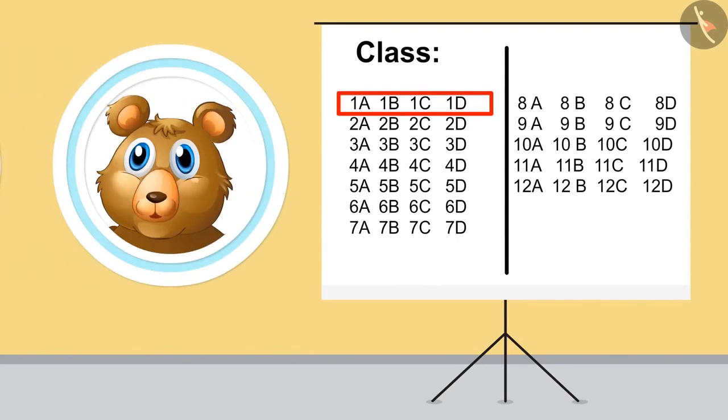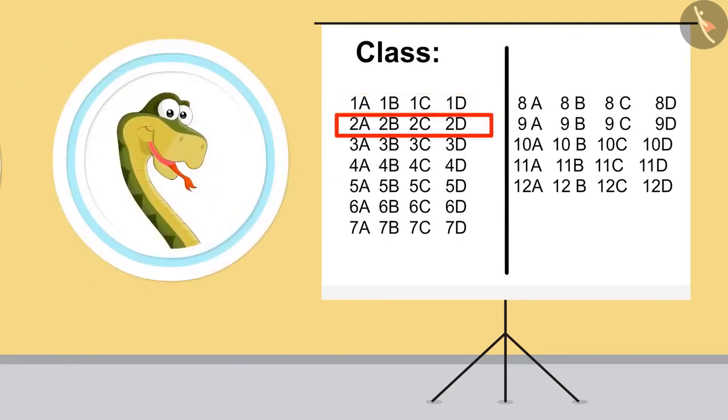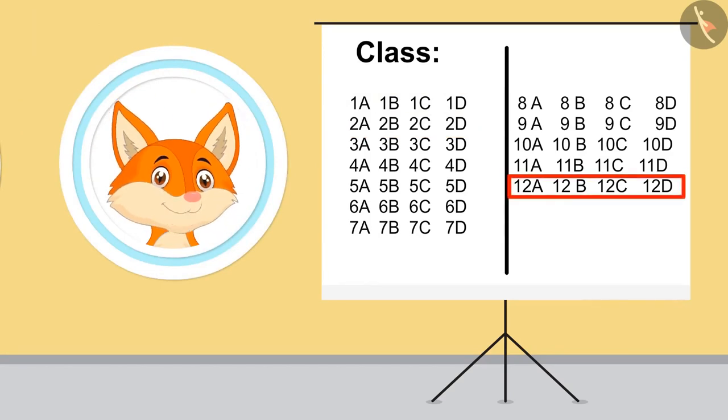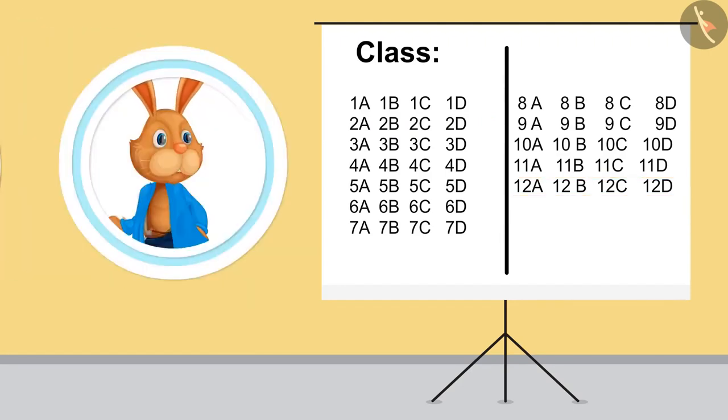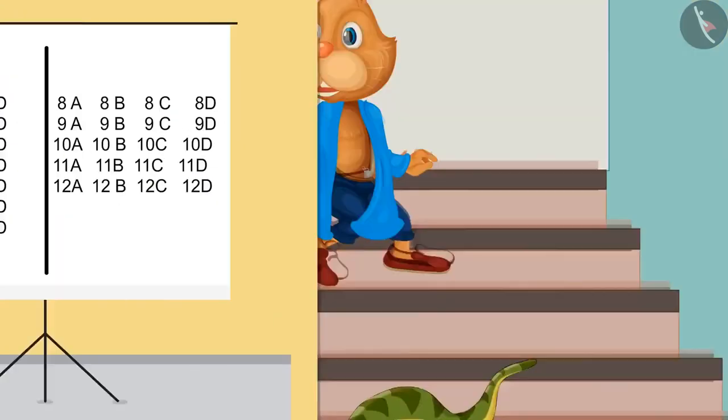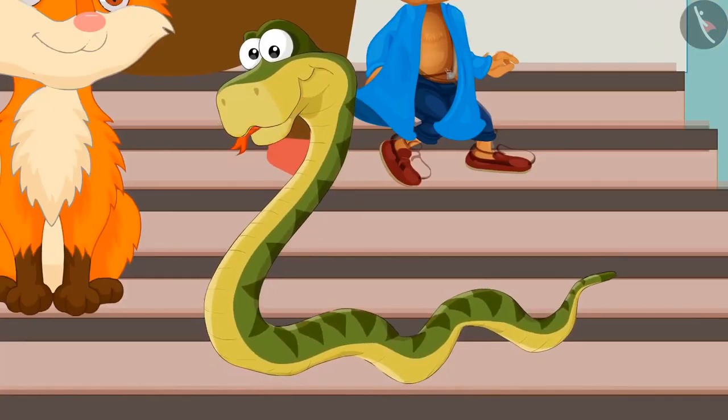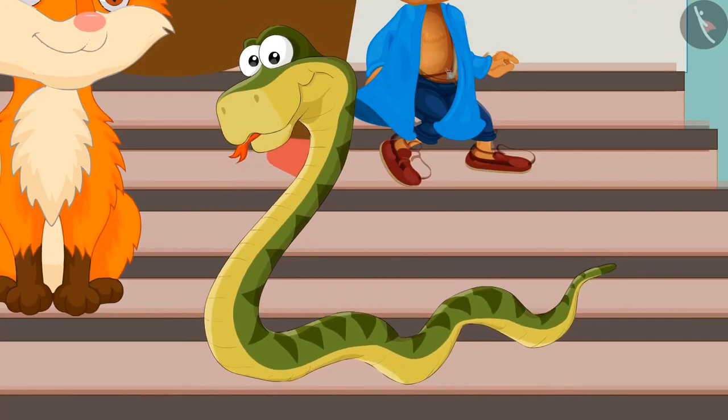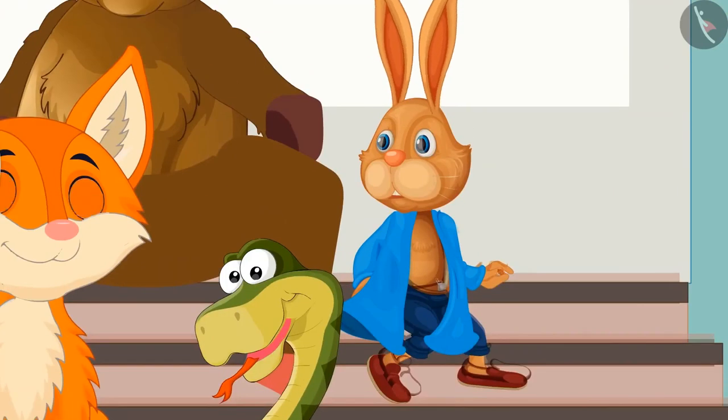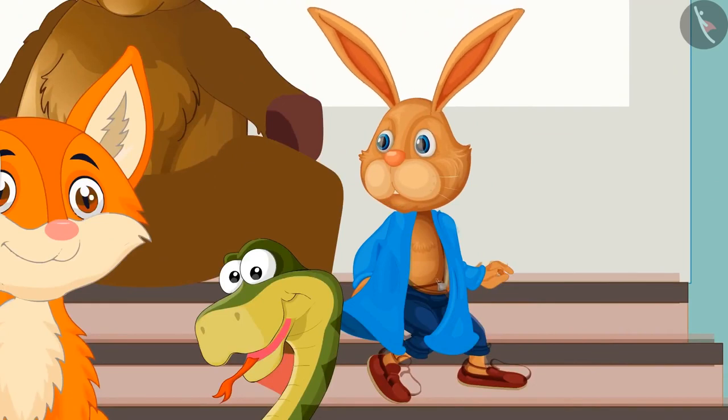Yes, yes. 1A, 1B, 1C and 1D. Then 2A, 2B, 2C, 2D. Yes, till 12th, all classes are named like this with numbers and alphabets together. How beautifully it becomes a pattern. Yes, I have never thought about this. Have you seen these numbers elsewhere?